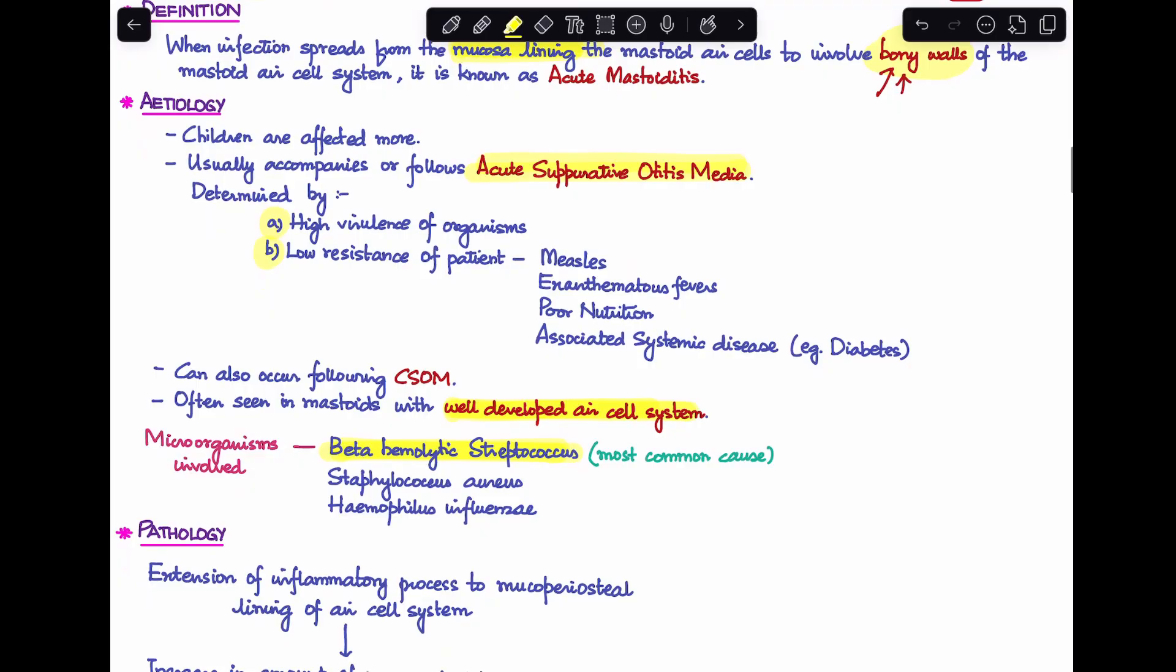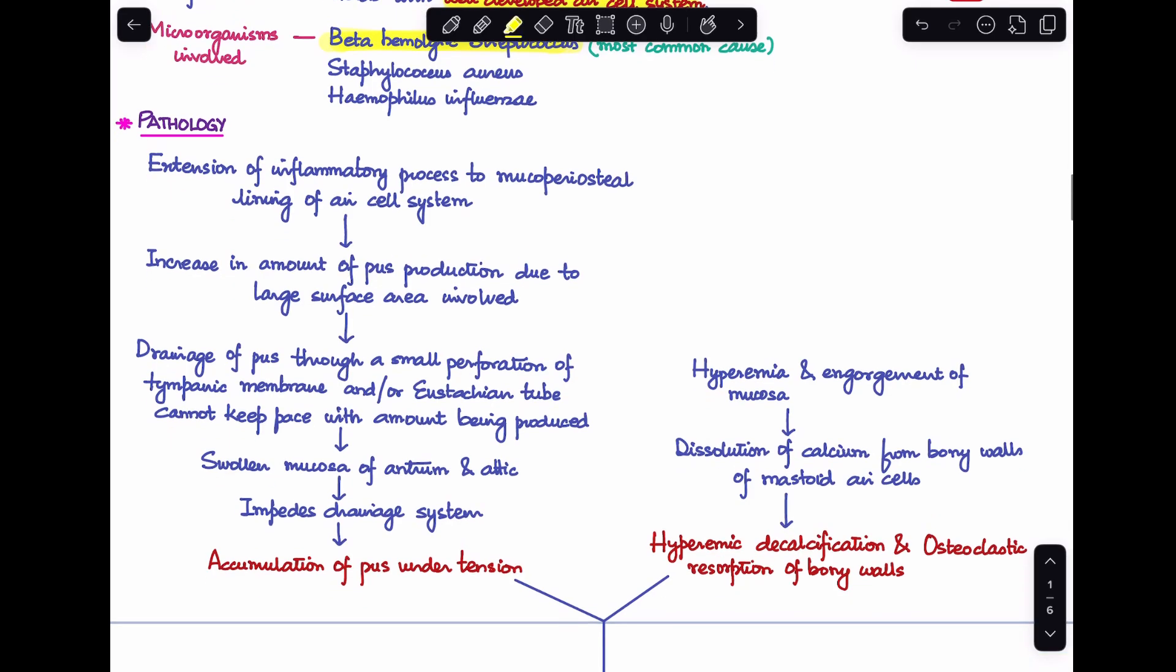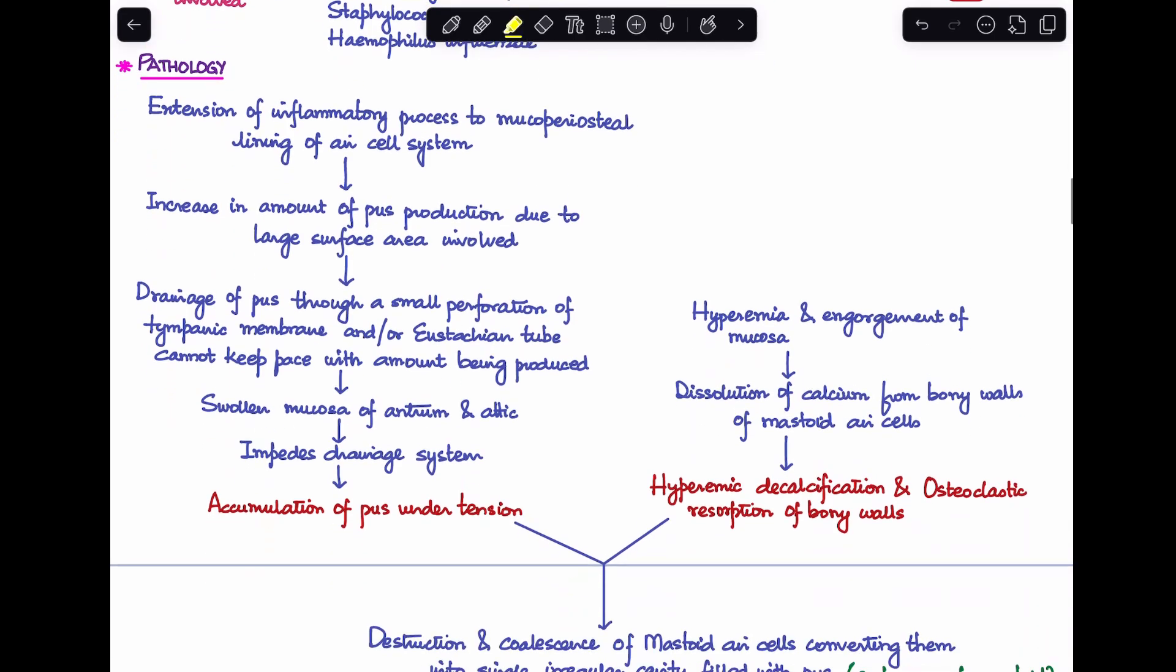Let's understand the pathophysiology. There is an extension of the inflammatory process to involve the mucoperiosteal lining of the air cell system. Once it involves the whole air cell system, there's increased pus production because of the large surface area involved. There's a problem with drainage because all the pus is trying to drain through a small perforation of the tympanic membrane or the eustachian tube. This drainage cannot keep up with pus production. More production and less drainage means pus accumulates.